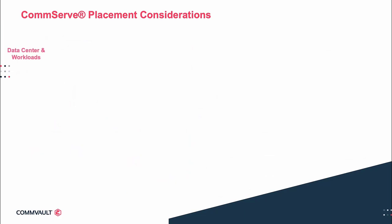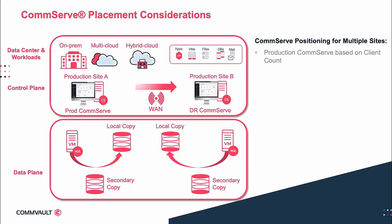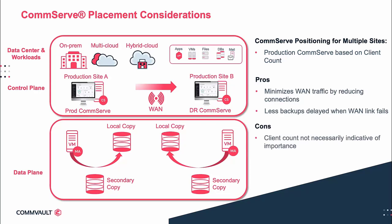In some situations, there is not a defined DR site. Take an active-active example, with two production data centers which perform local backups and secondary copies to the opposing location. This architecture involves a trade-off between speed of DR and impact of operations. One way we could determine where to place the CommServe would be by client count — the CommServe would be placed in the data center with the higher client count to impact the least number of clients. However, the client count doesn't indicate the importance of the data, so a more qualitative analysis may be needed.